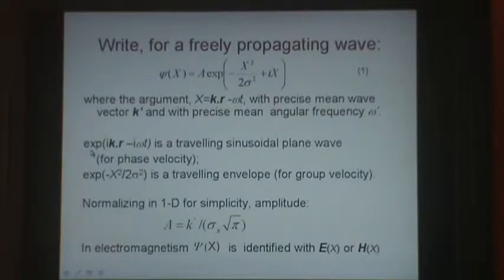The travelling wave can be written as the exponent of i k dot r minus i omega t. k is the wave vector, r is the position coordinate, omega is the angular frequency, t is the time coordinate.